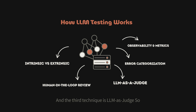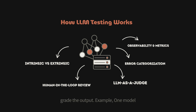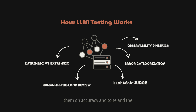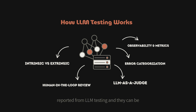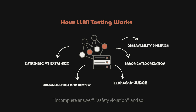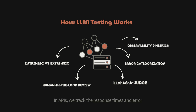The third technique is LLM as a judge — ironically, we sometimes use another LLM to grade the outputs. One model generates responses and another model scores them on accuracy and tone. The fourth technique is error categorization: instead of just saying fail, we classify all the errors coming from LLM testing into categories like hallucination, bias, incomplete answers, safety violations, and so on.